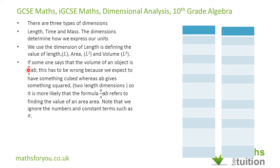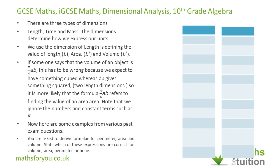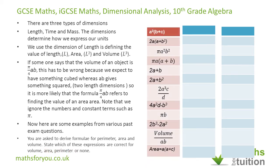For some examples: you are asked to derive formulas for perimeter, area, and volume, and state which of the given expressions are correct for volume, area, perimeter, or none. For the first formula, if A equals B and A equals C, we get A squared times (A plus A), which is A squared times 2A, giving 2A cubed. Since it's cubed, this formula is valid for volume.